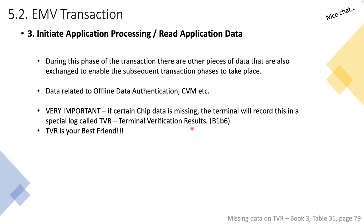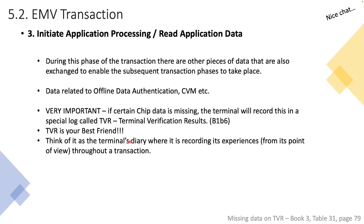All of you need to remember that TVR is your best friend. As you work in EMV, you'll find that a lot of the time you'll be looking at TVR data to try to understand what happened during a transaction. During this initiate application processing or read application data phase, data is exchanged between the card and the terminal. However, if some of the data the terminal asked for from the card is not supplied by the chip, then this event — chip data being missing — gets recorded in a log we call TVR, which stands for Terminal Verification Result. TVR is your best friend; think of it as the terminal's diary, recording its experiences from its point of view throughout a transaction. The TVR is a view of the transaction specifically from the viewpoint of the terminal, not from the viewpoint of the card.